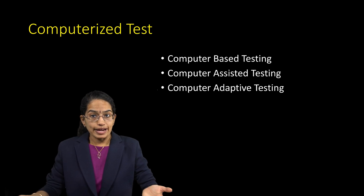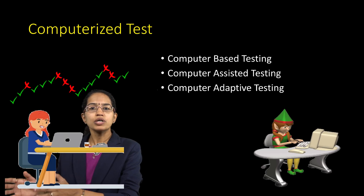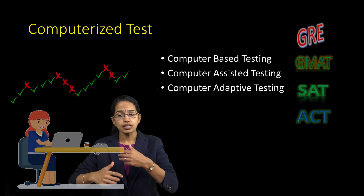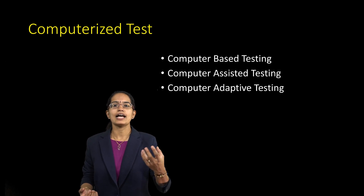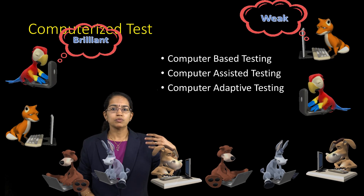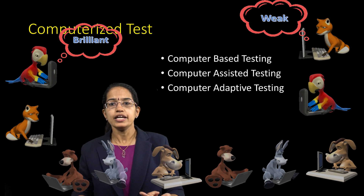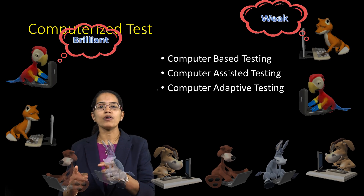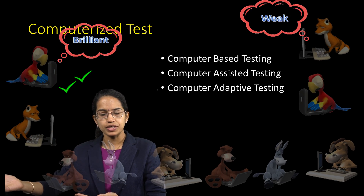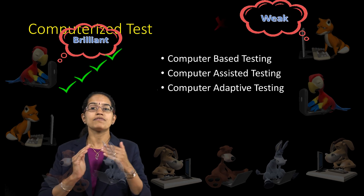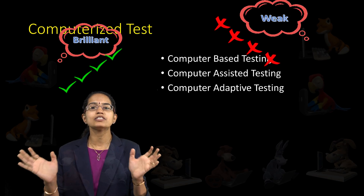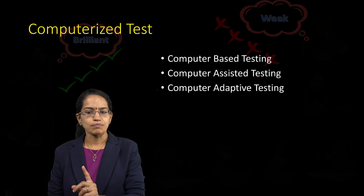The next type is the computer-adaptive test. We may move from computer-based to computer-adaptive tests perhaps ten years down the line. Good examples of computer-adaptive tests are GRE, GMAT, SAT, and ACT. In these tests, the computer uses mathematical modeling to understand the learner's ability. If a student answers the first question correctly, the next question will be more difficult; if incorrect, the next question will be easier, and so on.